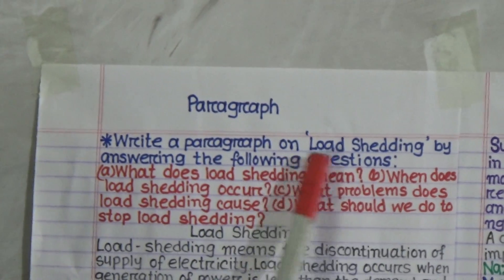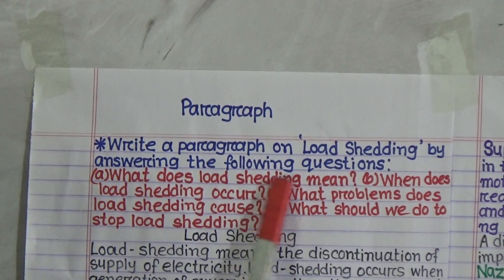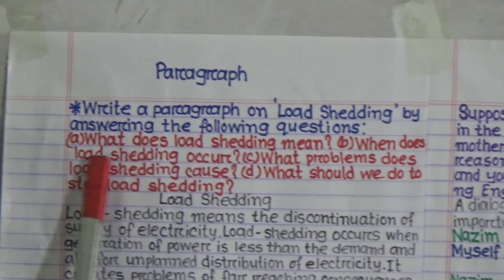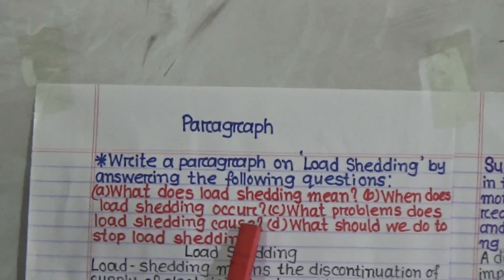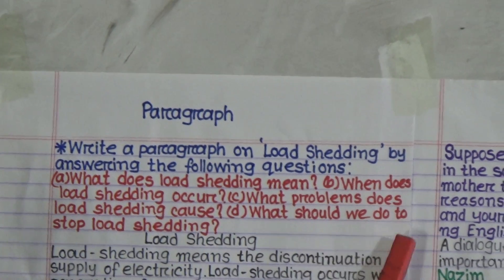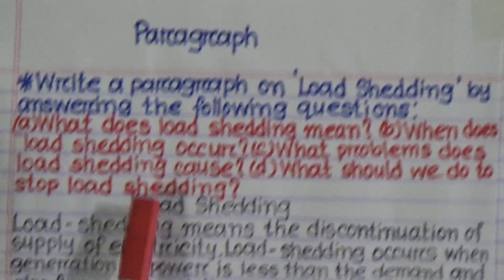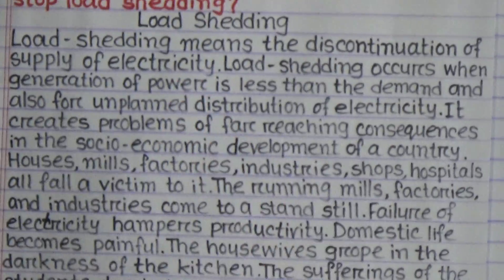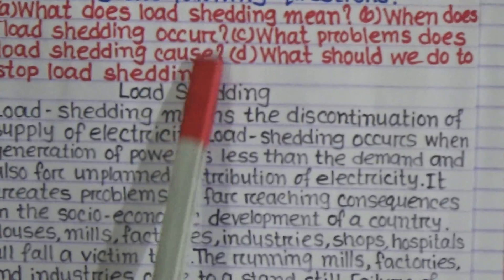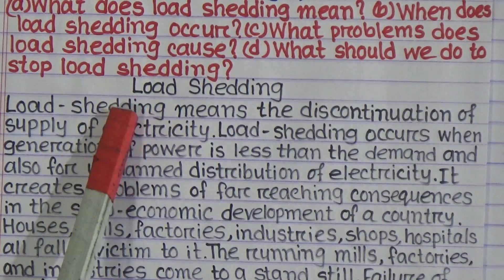First I want to start with paragraph. The question is: write a paragraph on load shedding by answering the following questions — (a) what does load shedding mean? (b) when does load shedding occur? (c) what problems does load shedding cause? (d) what should we do to stop load shedding? You have to write your paragraph by answering these questions.